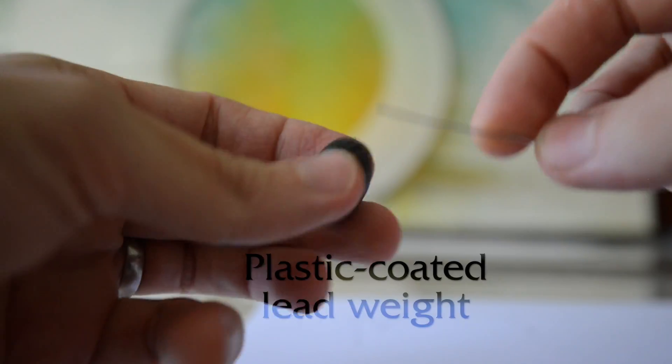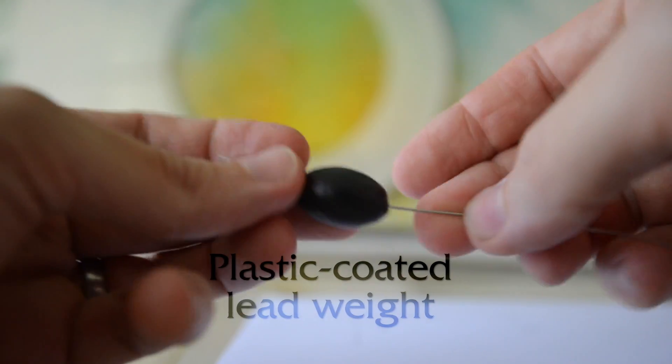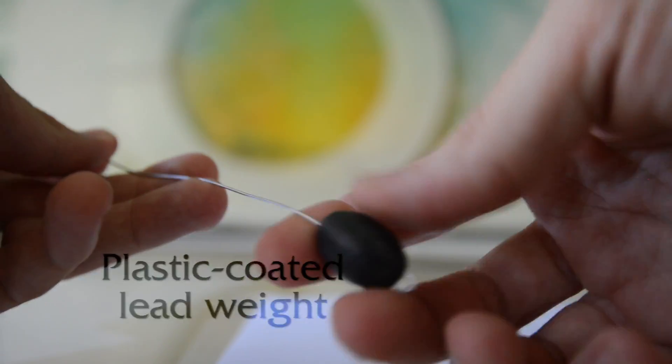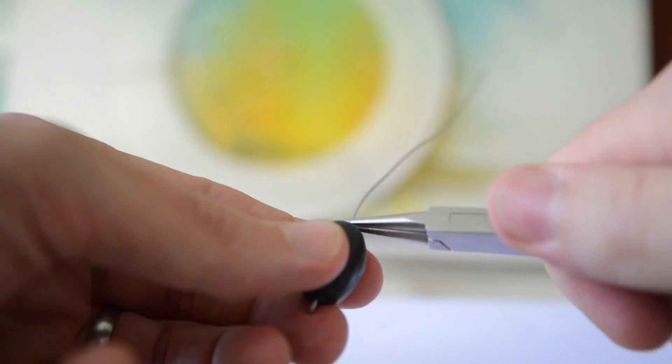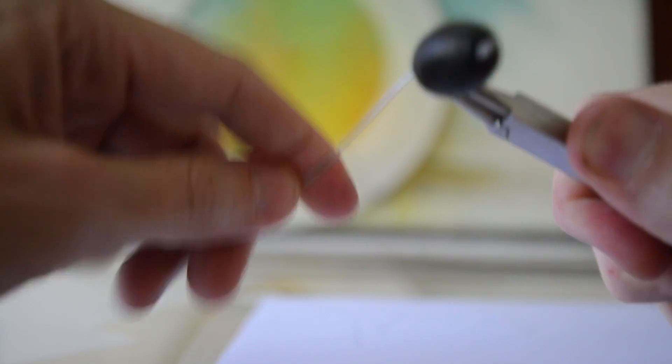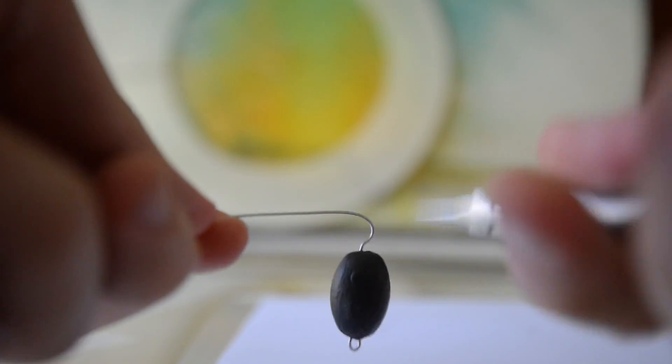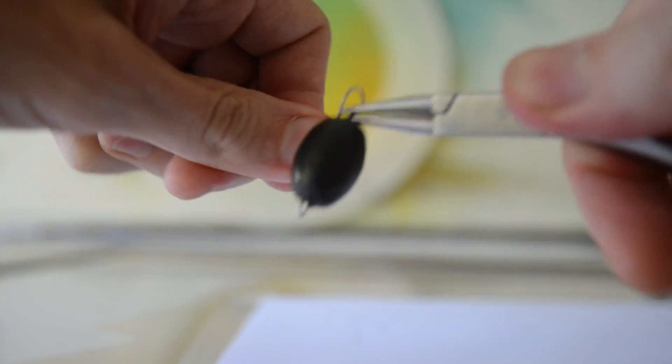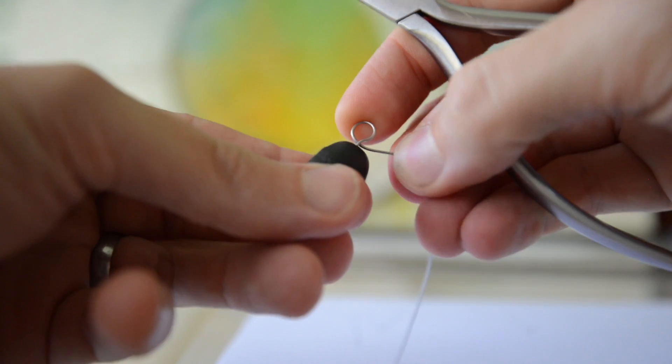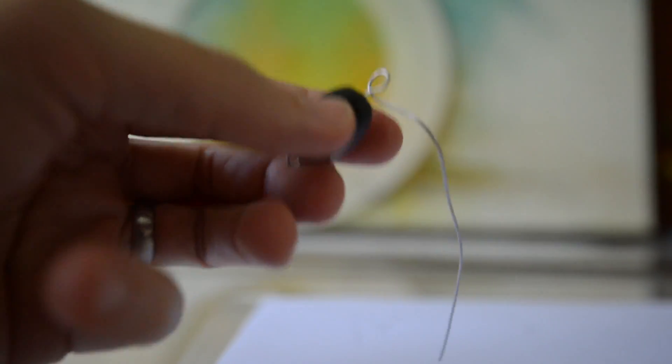This weight is plastidipped. You can buy that at a hardware store and it keeps the lead sealed away so that if anybody touches it they're not getting lead on their hands. We thought that was a pretty good idea. Now we're going to bend this around like this so that we have a nice little eyelet on top.